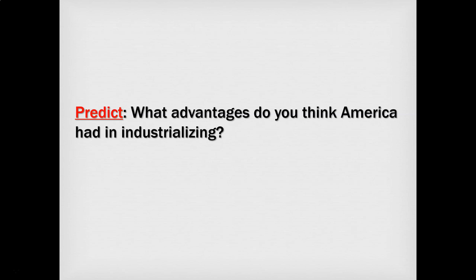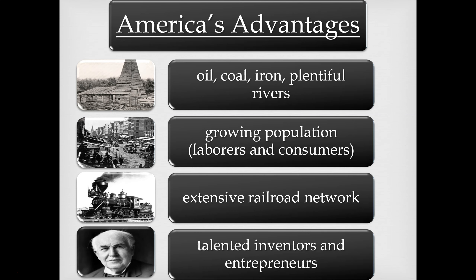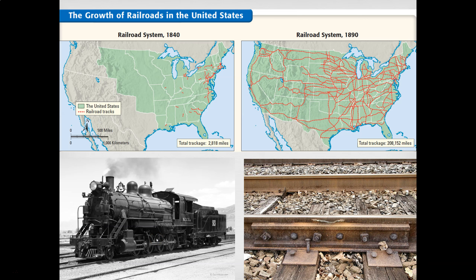Now let's think about America's advantages in industrializing. America had everything Britain had — natural resources, stable government, capital to invest — but even more. We have tons of oil, coal, and iron ore. We have a growing population, which gives us lots of laborers but also lots of consumers for goods. We would build the most extensive railroad network anywhere in the world, and we had top inventors and entrepreneurs like Thomas Edison.